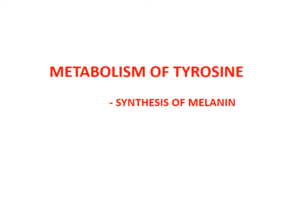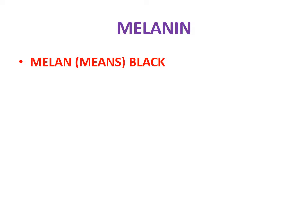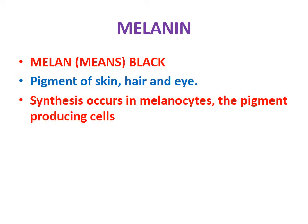Now we look at the metabolism of tyrosine — specifically the synthesis of melanin. What is melanin? Melanin is a name derived from 'melan' meaning black. It is a pigment of the skin, hair, and eye. The synthesis of melanin occurs in melanocytes, which are pigment-producing cells.